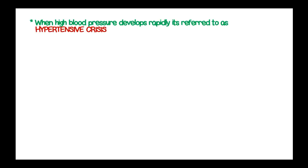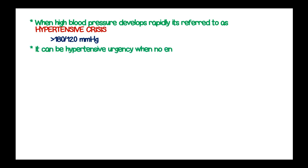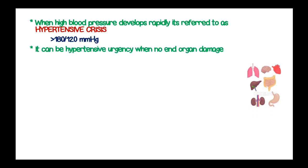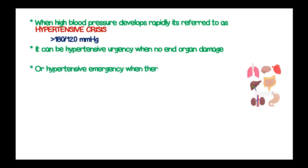When high blood pressure develops very rapidly, it is called a hypertensive crisis — that is more than 180 mmHg in systolic blood pressure and more than 120 mmHg in diastolic blood pressure. It can be hypertensive urgency when no end-organ damage has been observed, or hypertensive emergency when there is evidence of end-organ damage. The most commonly damaged organs are the brain, the heart, the blood vessels, and the kidneys.